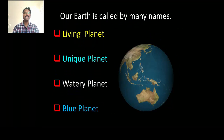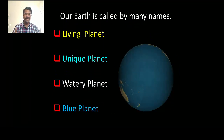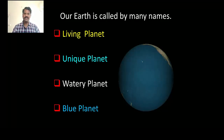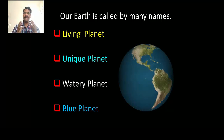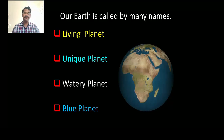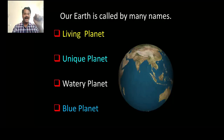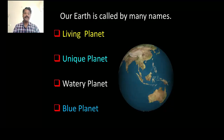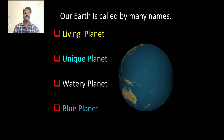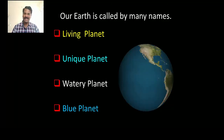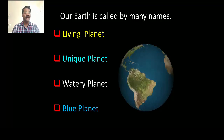The earth is called by many names. It is called living planet, unique planet, watery planet, and blue planet. It is called living planet because all living creatures — it is the only planet among the solar system where living creatures exist. It is called unique planet because of suitable temperature, atmosphere, and life-supporting gases — all of these are available only on this earth.